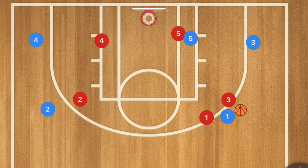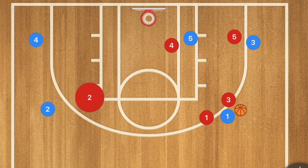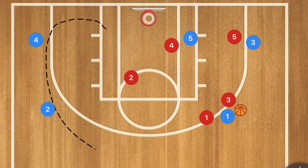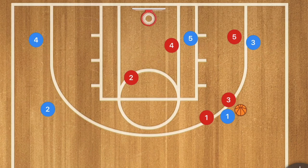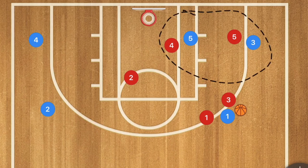If players 1 and 3 trap, player 5 needs to move out, player 4 needs to move in, and player 2 needs to move in. That way, player 2 is guarding the whole weak side of the court, player 4 is guarding the post player, and player 5 is guarding the player out on the wing — so those players do not get any open shots, at least right away.